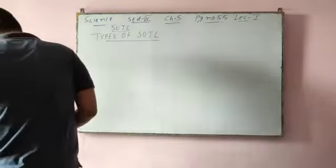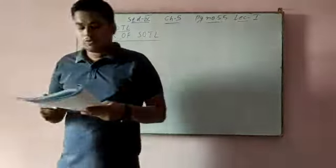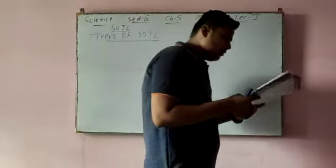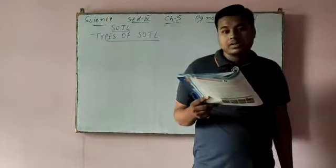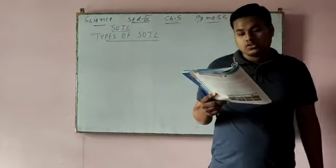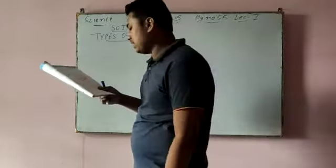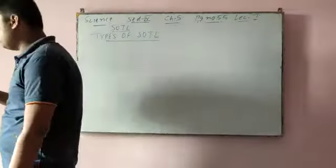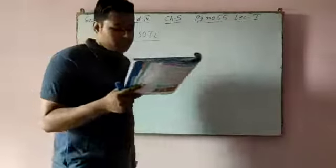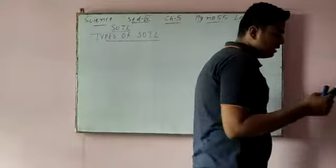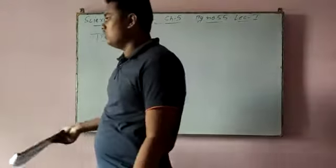Types of soil. Based on the proportion of the different types of soil particles present, soils are of three main types: sandy soil, clay soil, and loamy soil. Proportion means the share of something in relation to the whole.